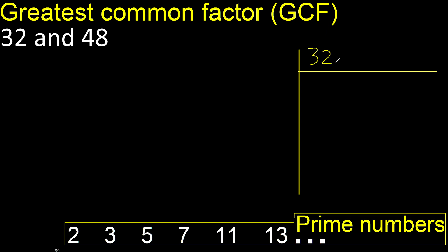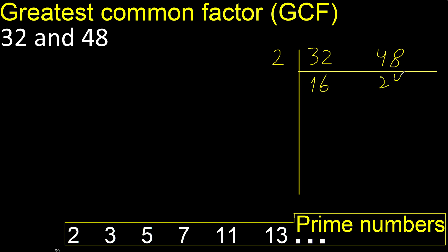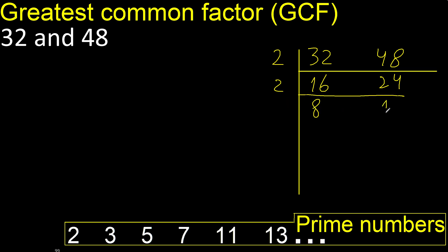Can 32 and 48 be divided by 2? Yes, therefore divide. 32 divided by 2 is 16. 48 divided by 2 is 24. Can be divided by 2 again. 16 divided by 2 is 8. 24 divided by 2 is 12.